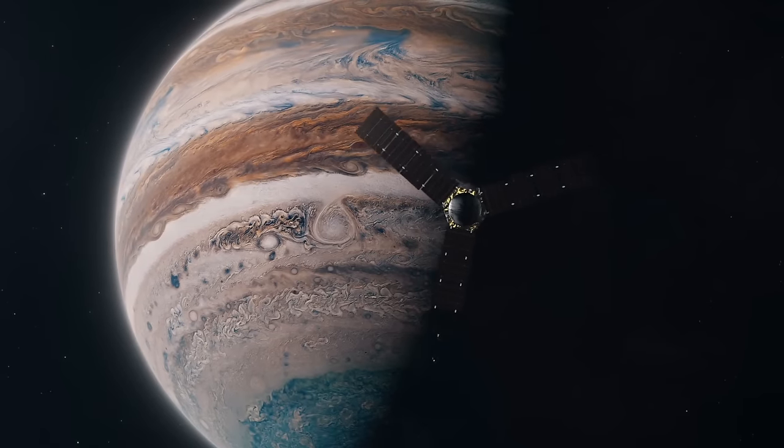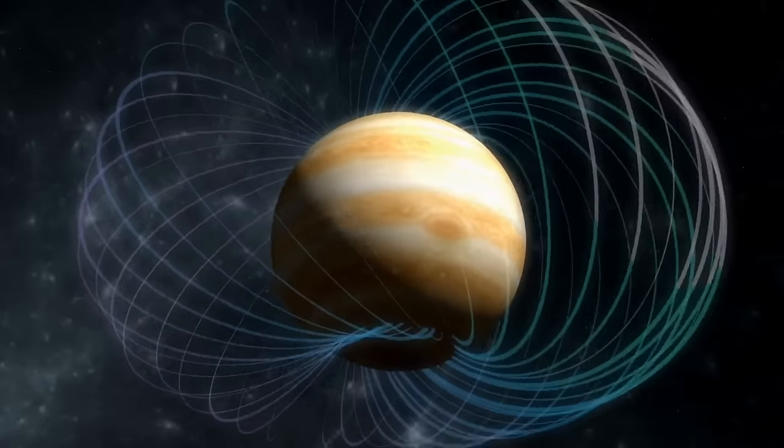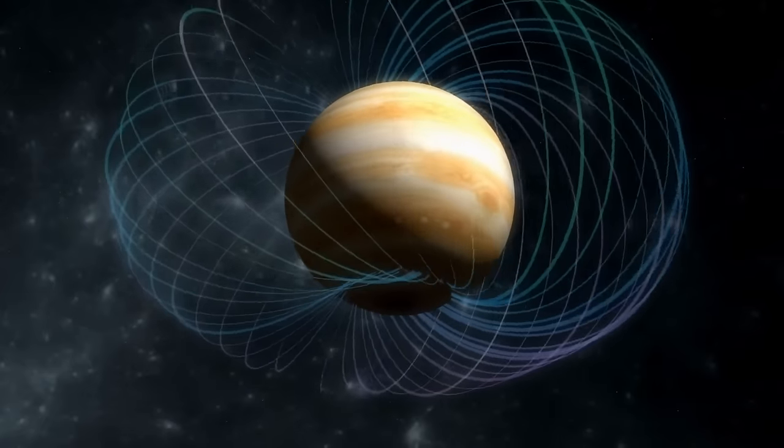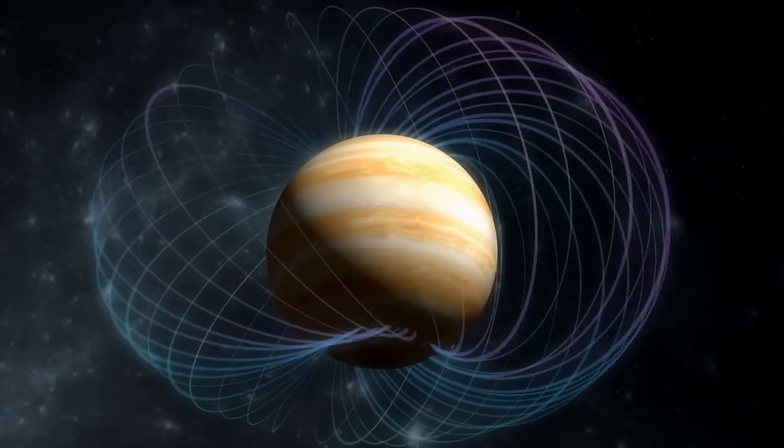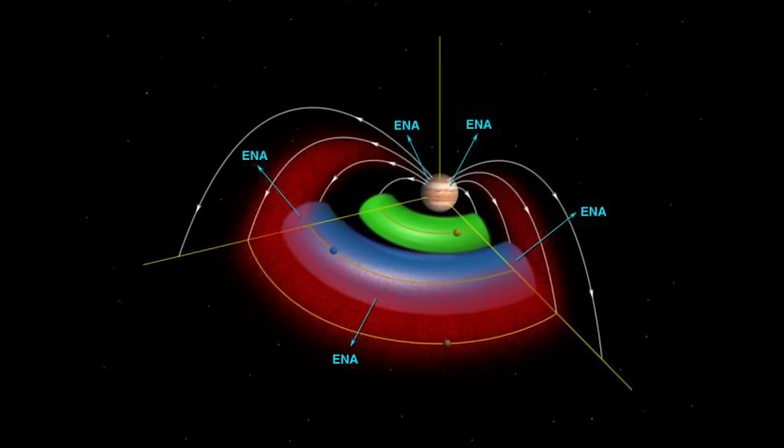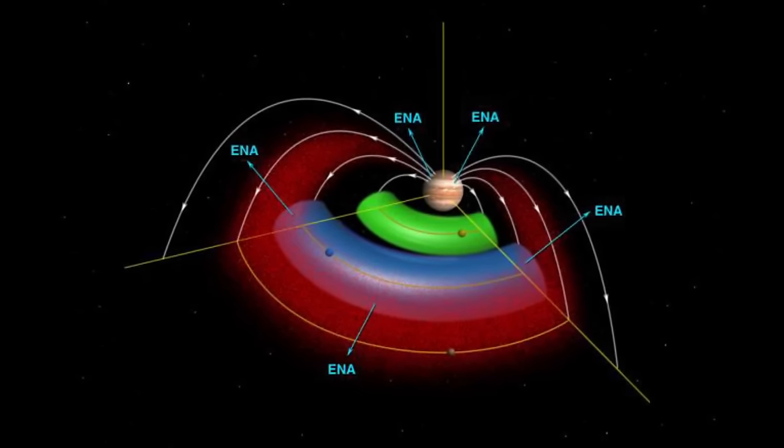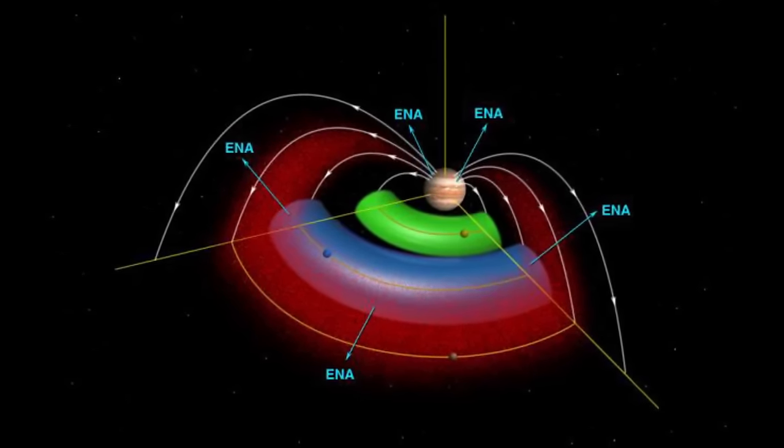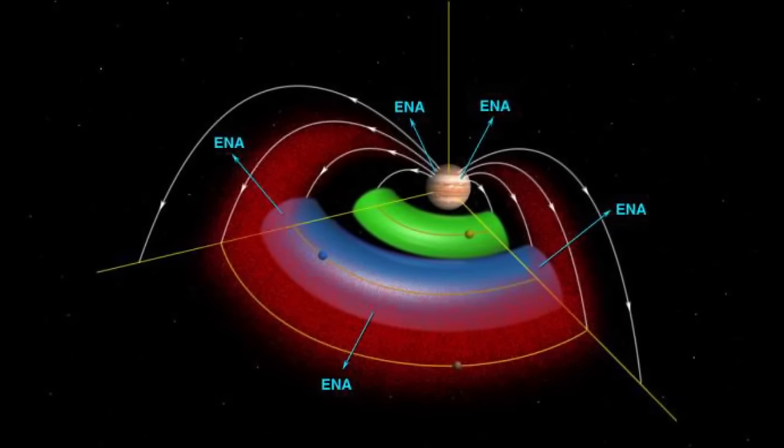Each time it passed by, it measured how strong the pull of the planet's gravity was. It helped astronomers create a 3D image of the stripes. It goes like this: the greater the pull, the greater the mass of the region below. And after examining the gravitational map, researchers concluded that the stripes ran shockingly deep. Most of them plunge to a depth of 1,800 miles.